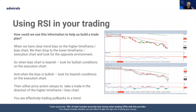When we have a very clear trend bias on the higher timeframe — the higher bias chart — we drop down to the lower timeframe execution chart and look for the opposite environment. When the higher timeframe bias chart is bearish, we're looking for bullish conditions on the execution chart. When the bias is bullish, we're looking for bearish conditions on the execution chart. What you're doing is utilizing price action setups to take a trade in the direction of the higher timeframe — effectively trading pullbacks in a trend.